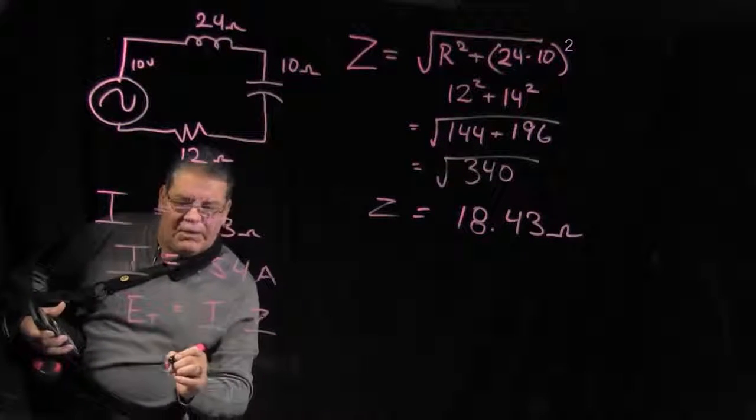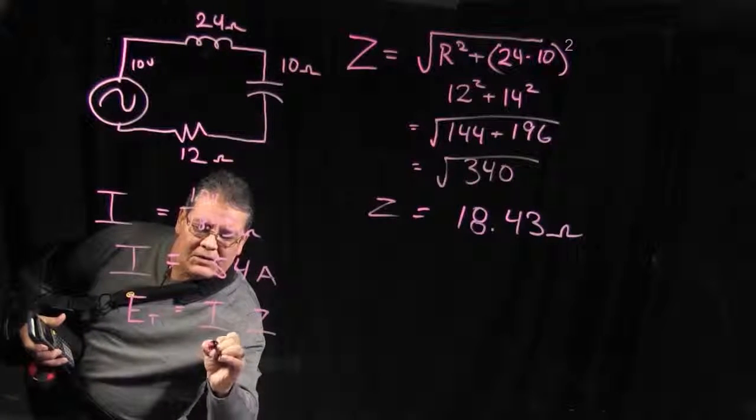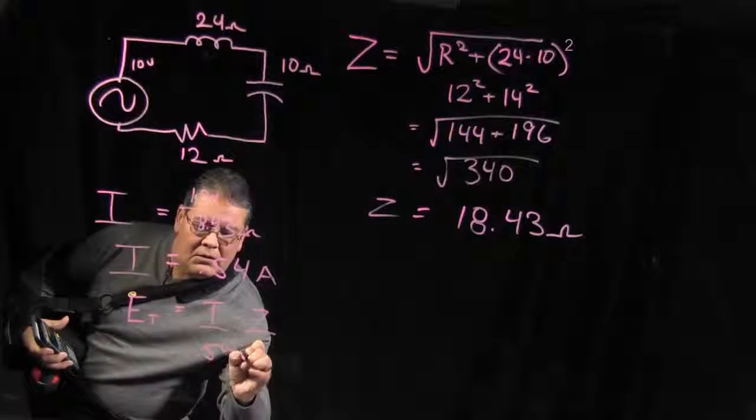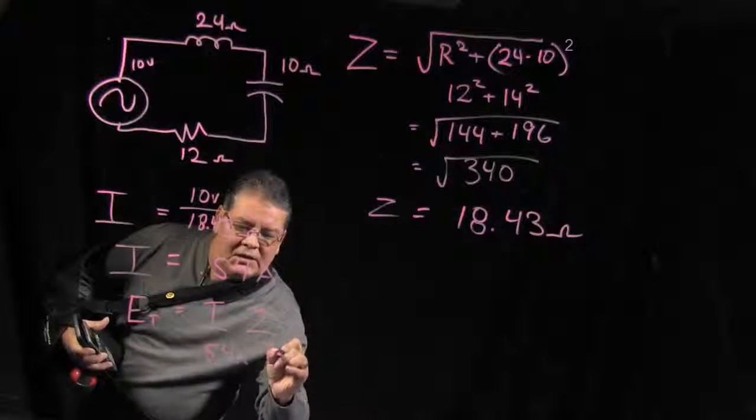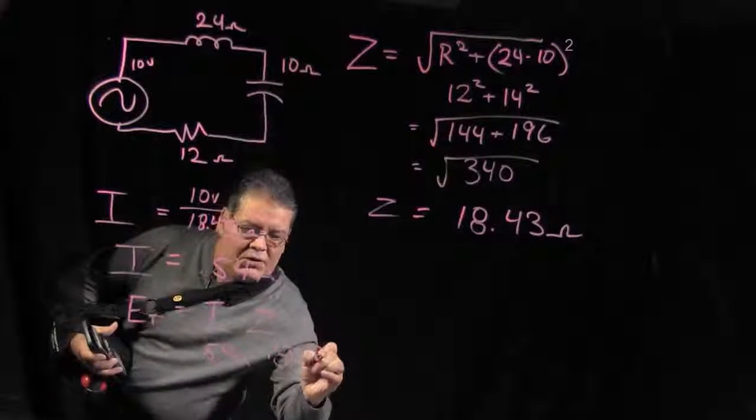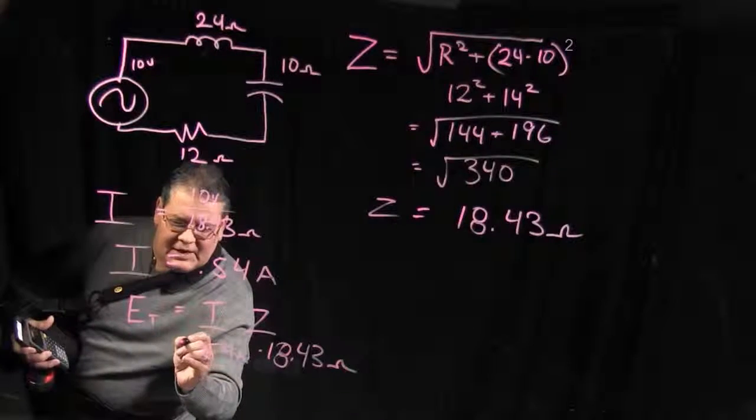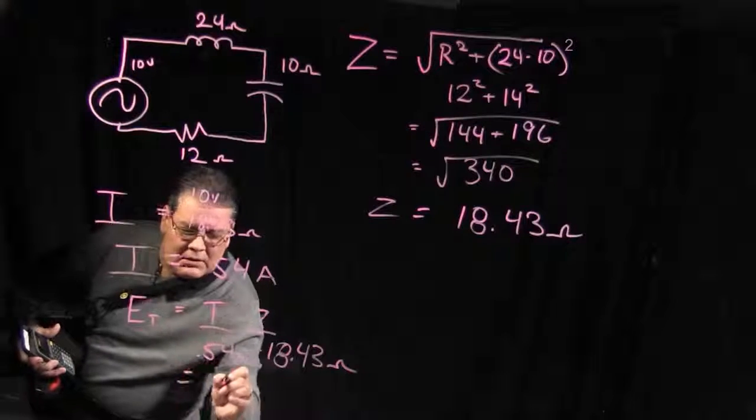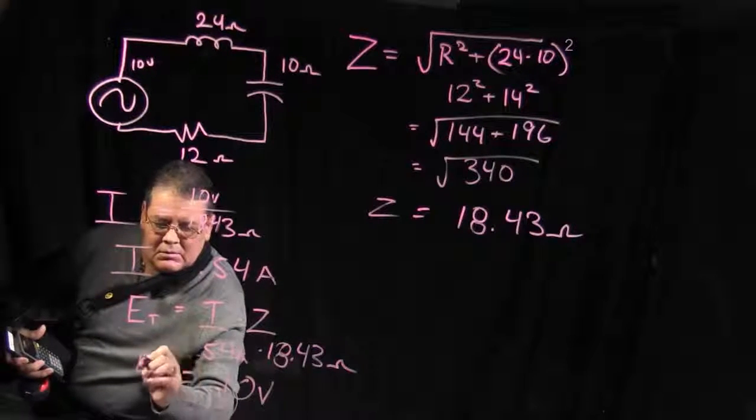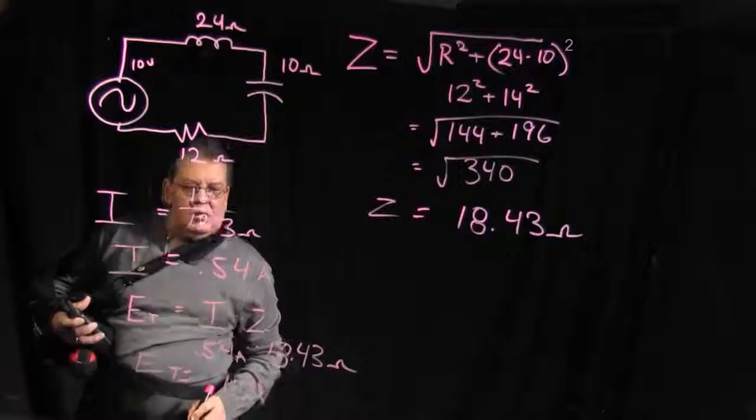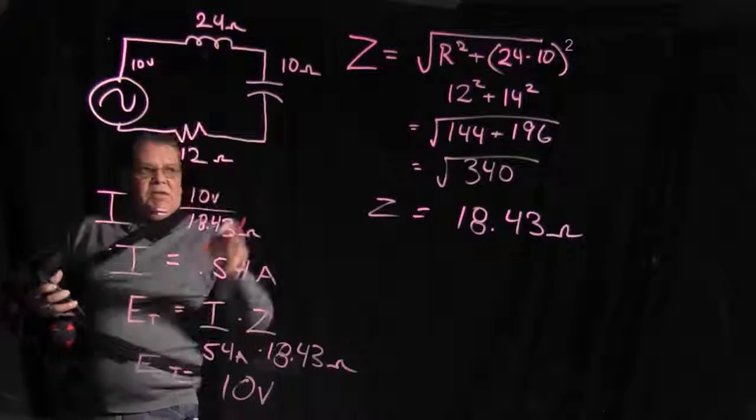Your I is 0.54 amps. And your ohms are 18.43 ohms. So you multiply that out and you come up with 10 volts. So that's how you can also work your circuit backwards to prove that everything is correct.